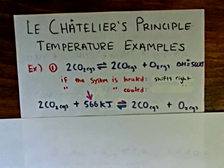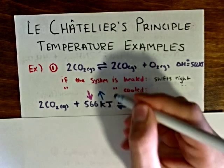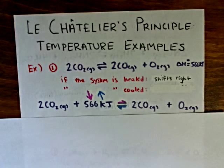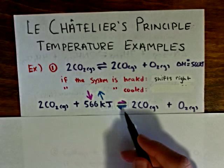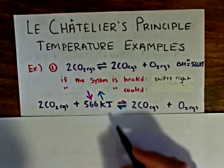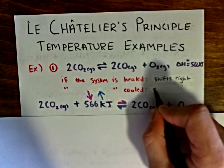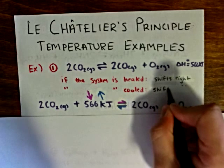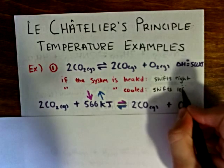If this equilibrium is cooled, I draw a blue arrow pointing away from the energy term. You can think of this as representing cold removing energy from the system. Referring back to our equilibrium arrows, whichever direction the blue equilibrium arrow is pointing is the direction the equilibrium will shift if cooled. The blue arrow is pointing to the left, so the equilibrium will shift to the left if cooled.